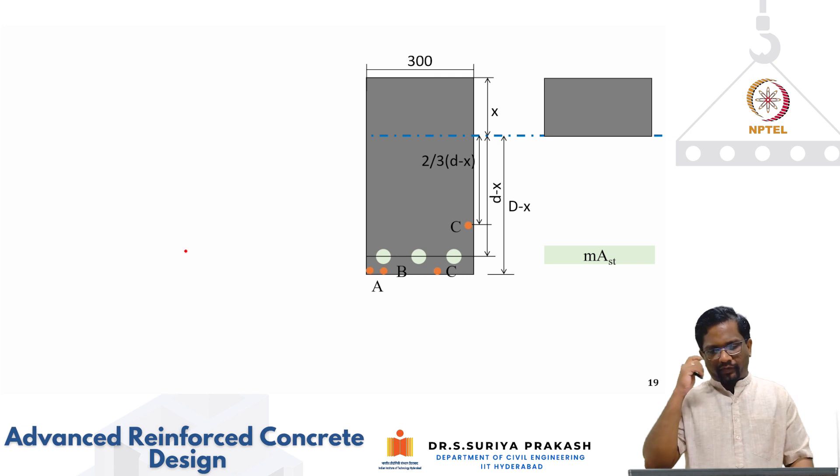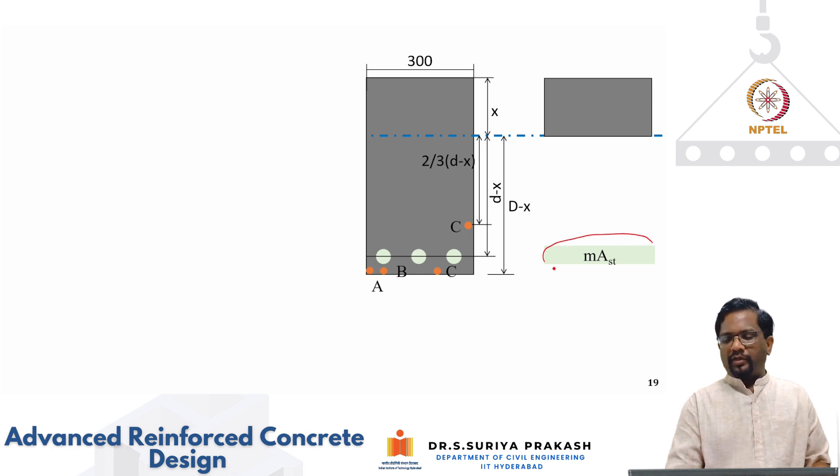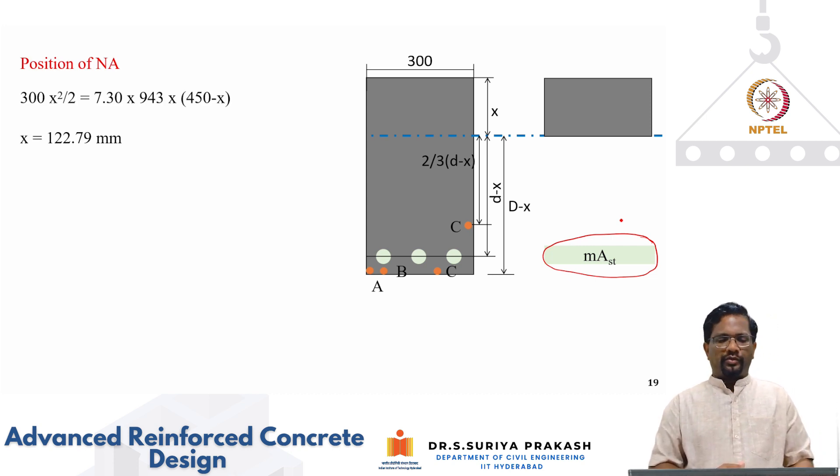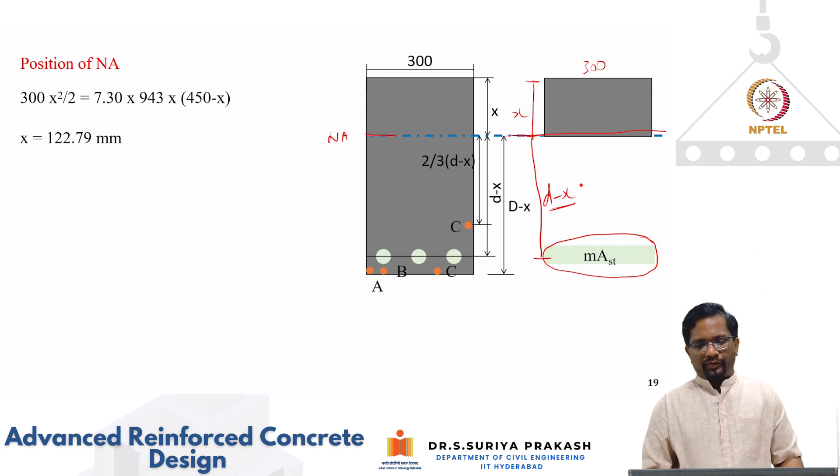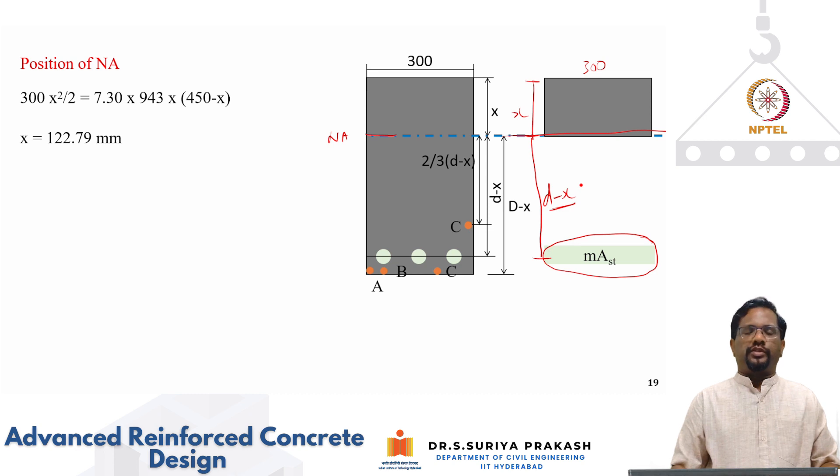Let us look at how to calculate. The first step is I need to calculate my cracked moment of inertia. And for to calculate the cracked moment of inertia, we are going to assume that concrete below the neutral axis is going to be neglected. And I am going to convert the steel into an equivalent concrete area using modular ratio. Then by equating the moments of these areas, I can calculate the positions of your neutral axis, which is x.